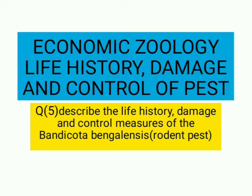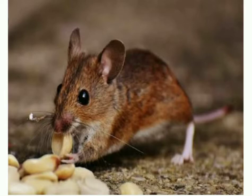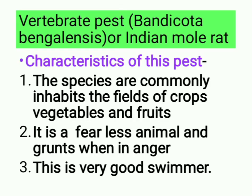Our fifth question is: describe the life history, damage and control measures of Bandicota bengalensis, i.e., the rodent pest. This is the picture of Bandicota bengalensis or rodent pest — it is a vertebrate pest. The scientific name of this vertebrate pest is Bandicota bengalensis, also known as the Indian mole rat.